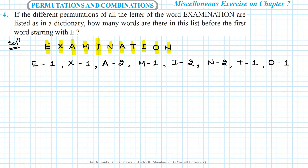Now we want to find how many words appear before the first word starting with E. Looking at all the letters, there is only one letter — A — that comes alphabetically before E. So we need to find all words starting with A, and once those words end, the first word starting with E will appear. There are a total of 11 letters in the word.